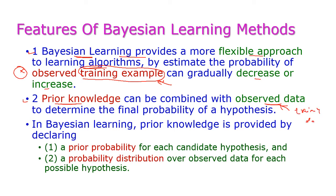The observed data, which is the training data, is used to determine the final probability of a hypothesis. In Bayesian learning, the prior knowledge is provided by declaring the prior probability for each candidate hypothesis, and the probability distribution over observed data for each possible hypothesis. These prior probabilities and probability distributions are very important for any learning method.